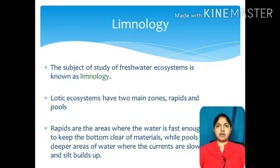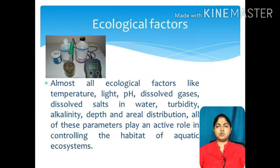Rapids are areas where the water moves fast enough to keep the bottom clear of material, while pools are deeper areas of water where currents are slower and silt builds up. Almost all ecological factors like temperature, light, pH, dissolved gases, dissolved salts, water turbidity, alkalinity, depth, and aerial distribution — all of these parameters play an active role in controlling the habitat of aquatic ecosystems.